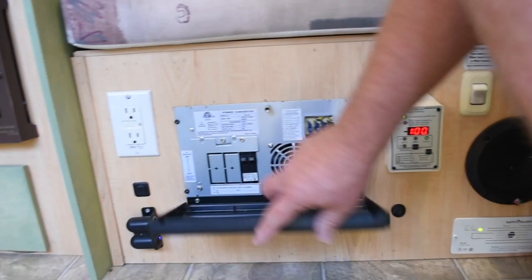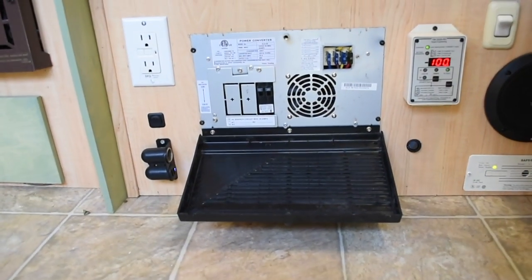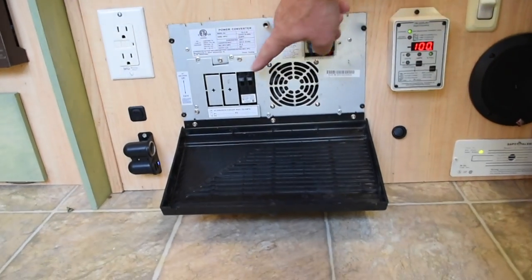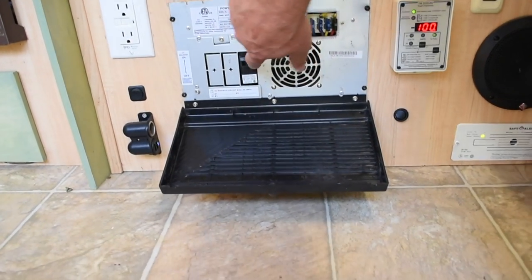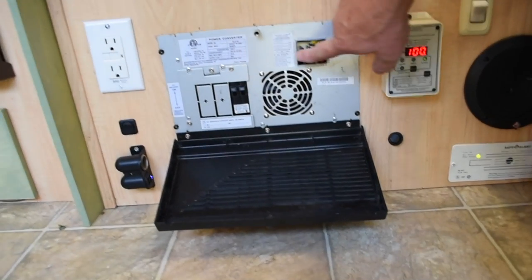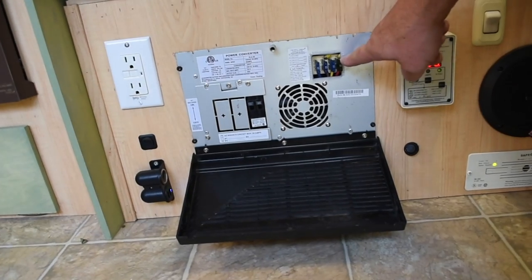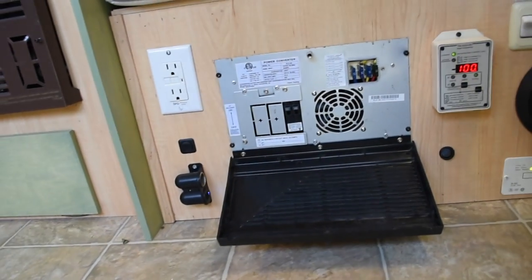So opening up my power center here, there's several things to notice. One is that this is divided into a couple sections. On the left over here is the 120 volt circuit breakers. So that's the high voltage side. And then on this side over here is the low voltage 12 volt side, where you find the 12 volt DC fuses of various ranges.